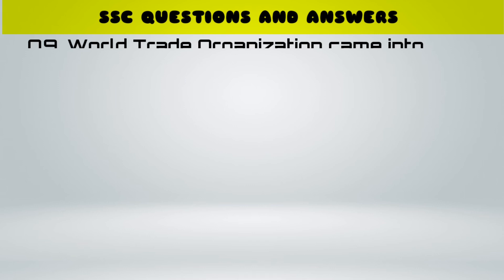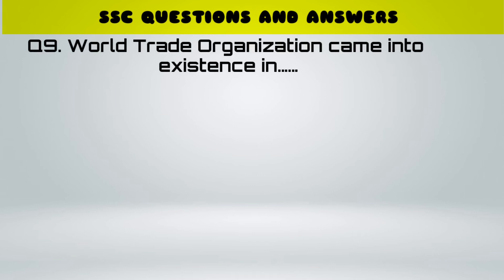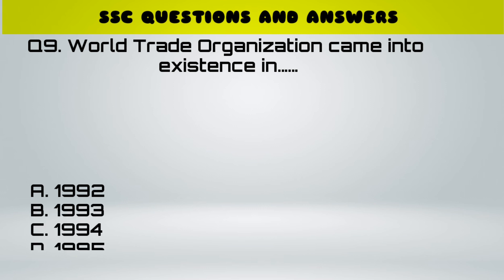Question number 9. World Trade Organization came into existence in: A. 1992, B. 1993, C. 1994, D. 1995. Answer: D. 1995.